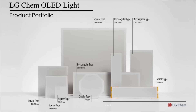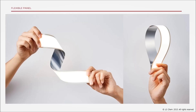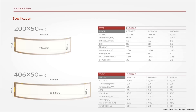Here are some updates on our panel portfolio. Changes from our previous lineup include a longer rectangular panel which comes in 400 by 50 millimeters, and our circular panel now comes with a circular external perimeter instead of the previous octagonal one, while the illuminating area remains the same. For flexible panels, in addition to the previous 200 by 50 millimeter format, we have released a longer rendition at 406 by 50 millimeters. The 3,000K and 4,000K flexible panels are available now, with 2,700K panels following soon.